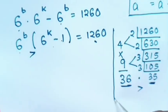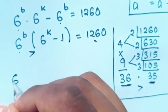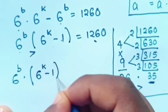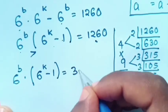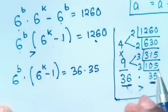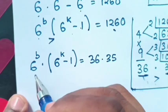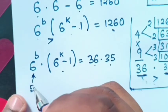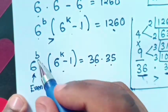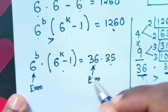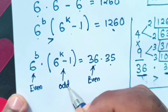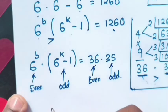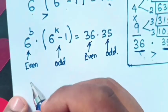Then, our question will be 6 to the b times 6 to the k minus 1 in bracket is equal to 36 times 35. Then, we compare because this is same as this and this is same as this. Also, 6 power b is even because even power any number is even, and 36 is even. This is even minus 1 is odd, and this one is odd. So, we compare even and even and odd numbers.